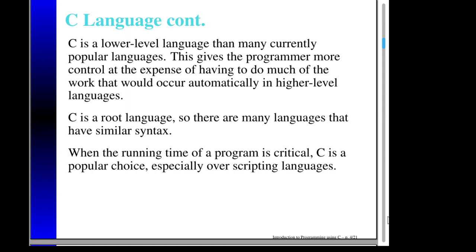So why would anybody want to use a lower level language? Lower level languages give you more control to do things. In fact, the Python interpreter is actually written in C — somebody wrote a very big program in C that then allows you to write code in Python. So C gives you a lot of control, but also expects you to do a lot of work. That's the trade off.